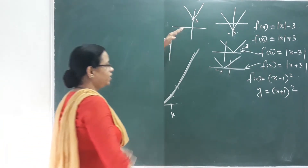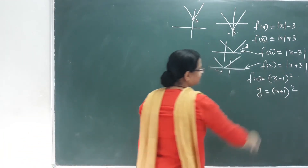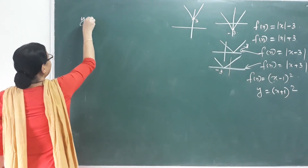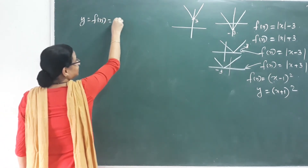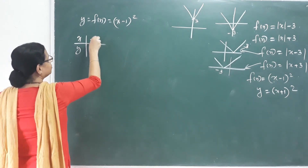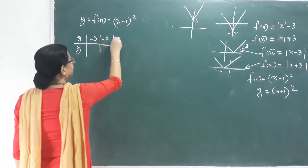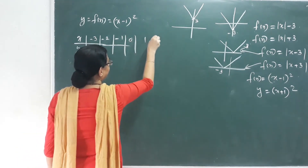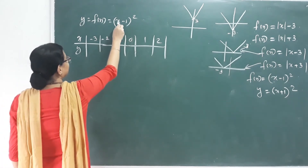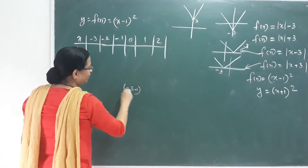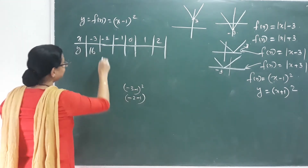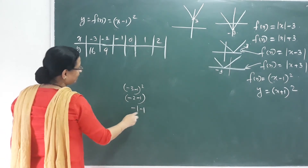The next graph is f of x is equal to x minus 1 whole square. How do I see this graph? F of x equals x minus 1 whole square. Here x equals y. The x values are negative 3, negative 2, negative 1, 0, 1, 2, 3. We have: for x equals negative 3, f(x) equals 16; for negative 2, equals 9; for negative 1, equals 4.